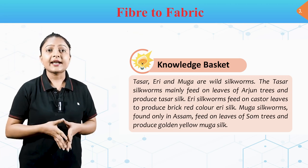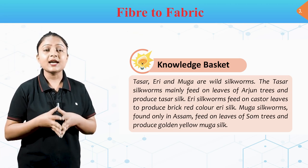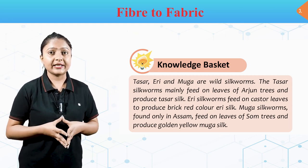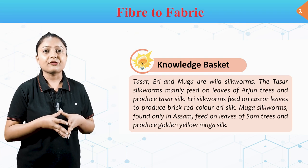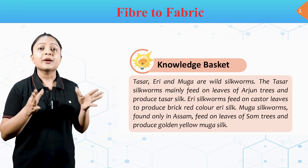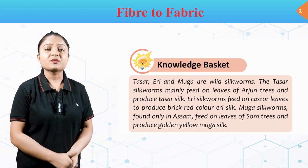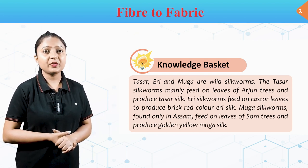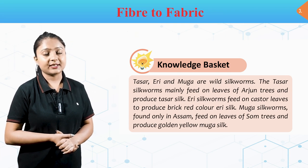Knowledge Basket — Tassar, Eri and Muga are wild silkworms. Tassar silkworms mainly feed on leaves of arjun trees and produce Tassar silk. Eri silkworms feed on castor leaves to produce brick-red Eri silk. Muga silkworms, found only in Assam, feed on the leaves of soomed trees and produce golden yellow Muga silk.